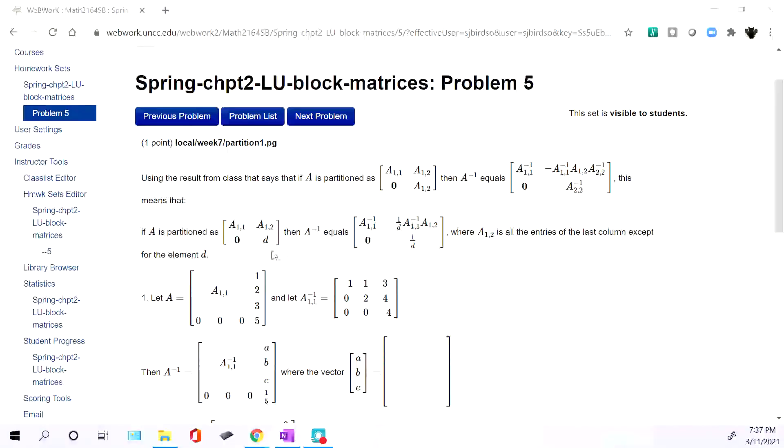The inverse of a single number is just one over that number. So here, this said our block on the bottom was just the three zeros. Our block on the side was the numbers one, two, three, and our block on the bottom was just a single number five.